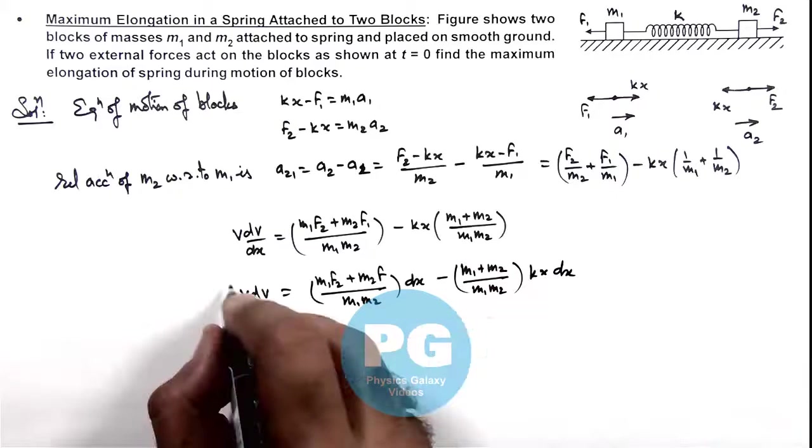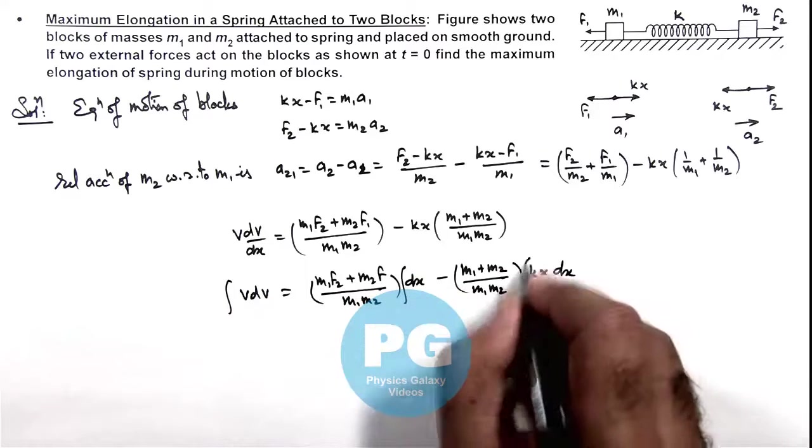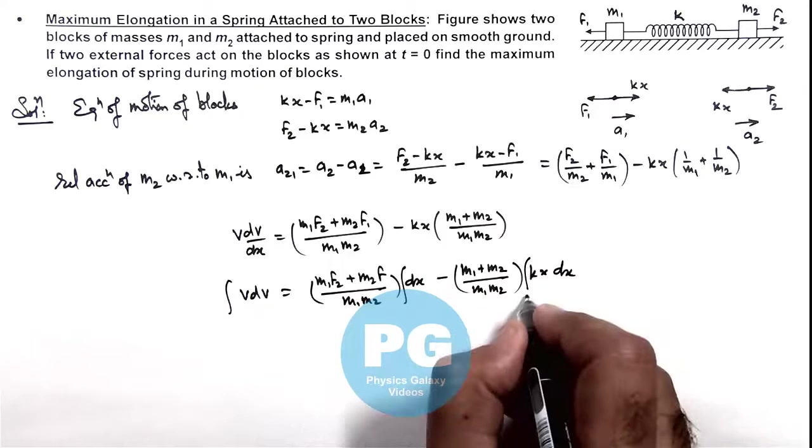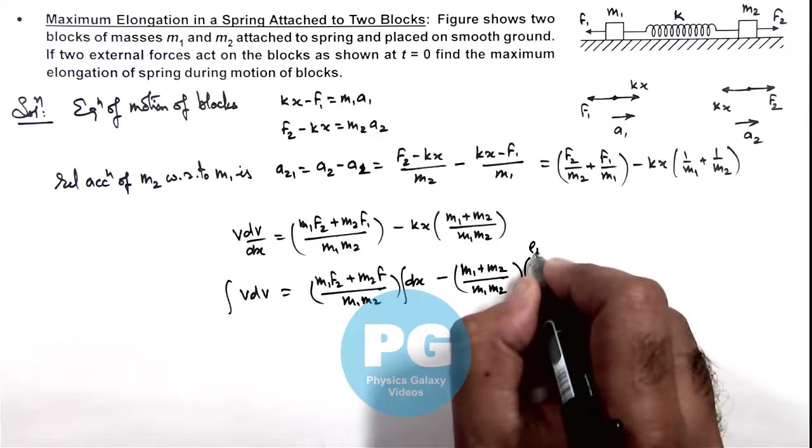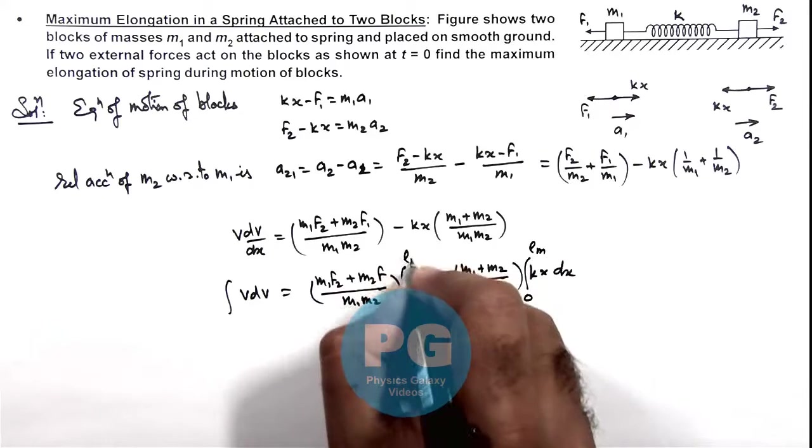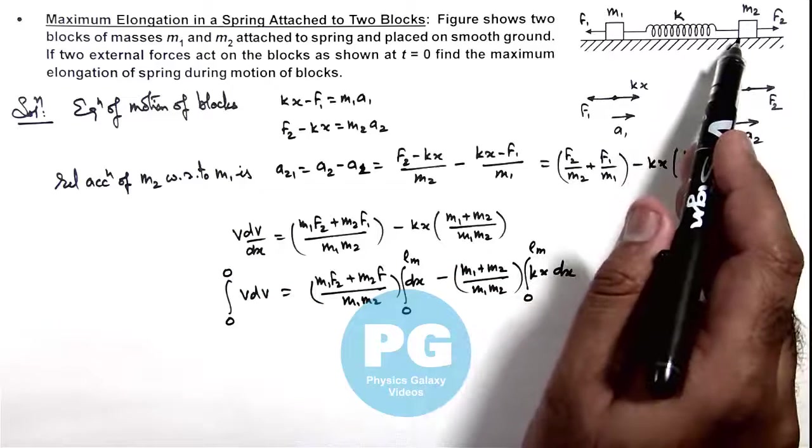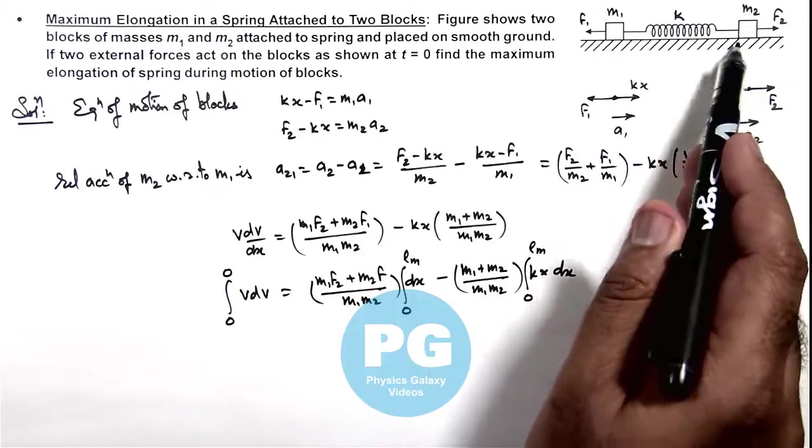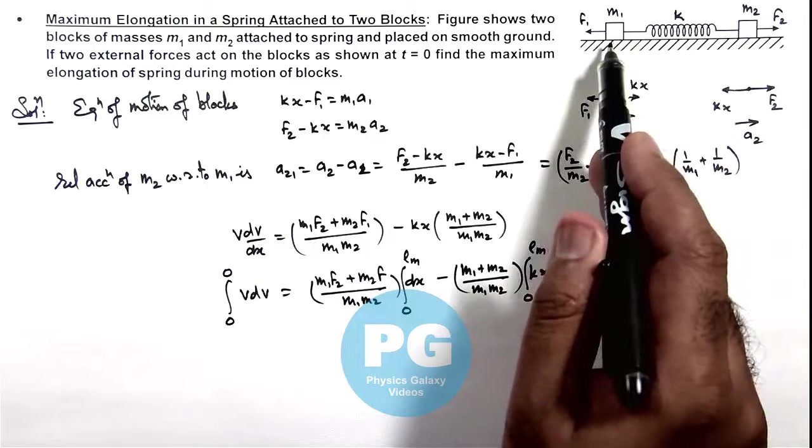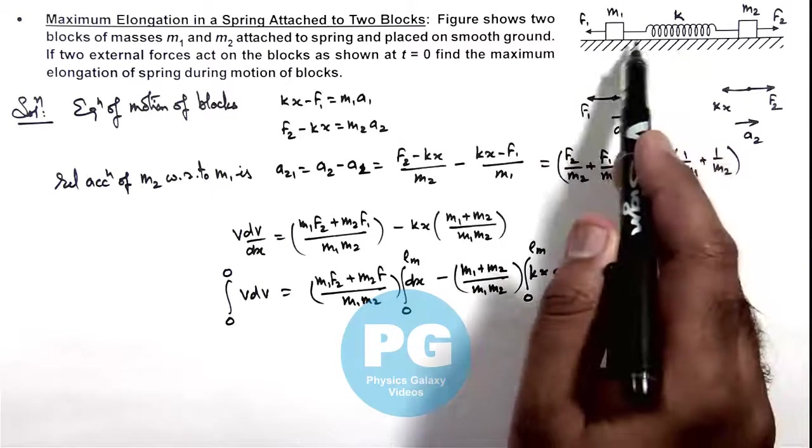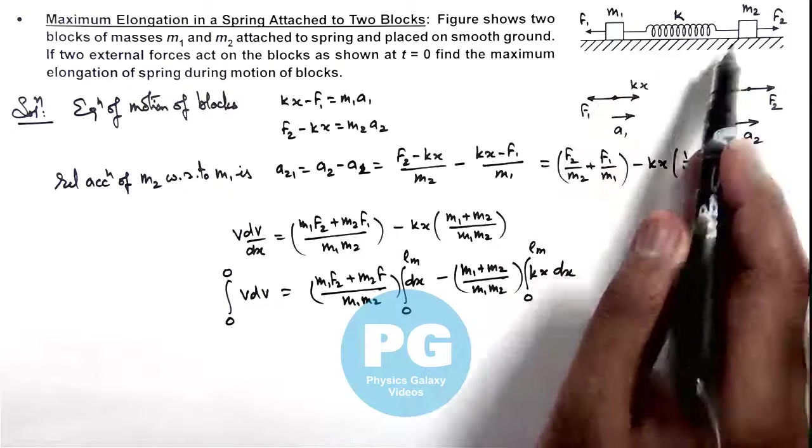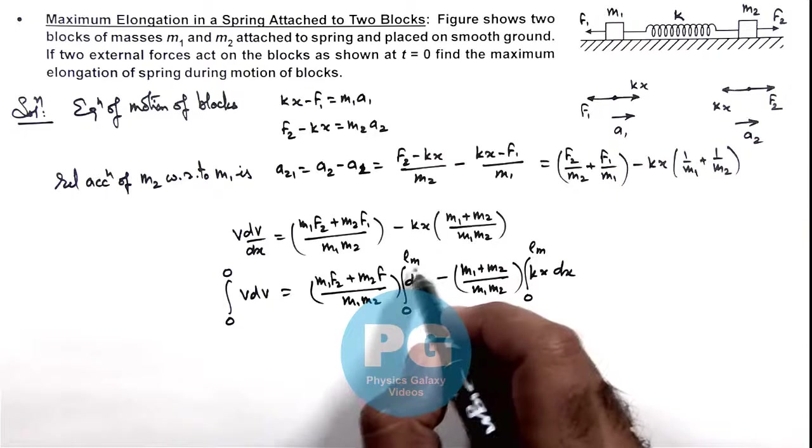Now we can integrate both of these sides with the limits from x zero to lₘ, and v from zero to zero because initially the block m₂ was starting at rest with respect to m₁ because it was also at rest. And later when the spring will be at maximum elongation and the final maximum length of the spring is lₘ.